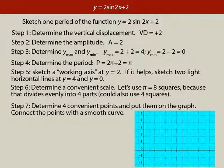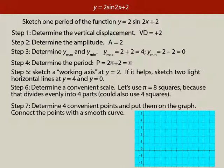Determine the amplitude — that's given by the number at the beginning, and that's also a 2, so the amplitude is 2. Determine Ymax and Ymin. The graph will be raised up 2 — that'll be the vertical displacement — and then from there it will go up 2 to Ymax because the amplitude is 2. So Ymax is 4. And then it will go down 2 from the vertical displacement to 0.